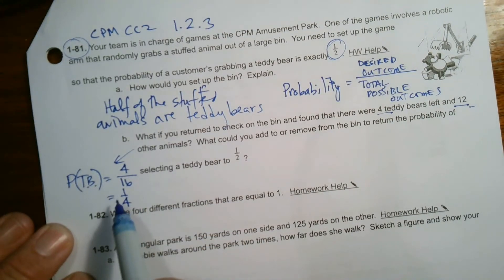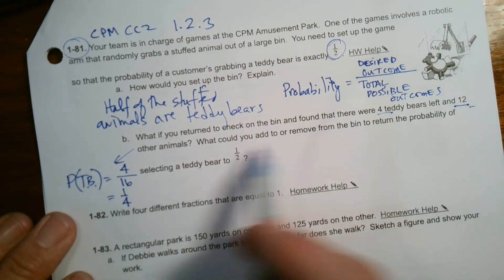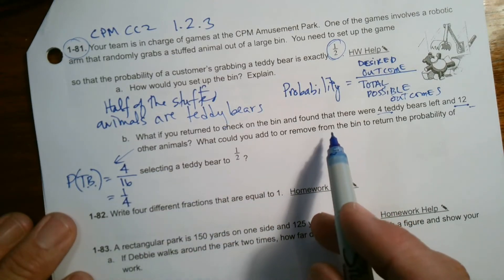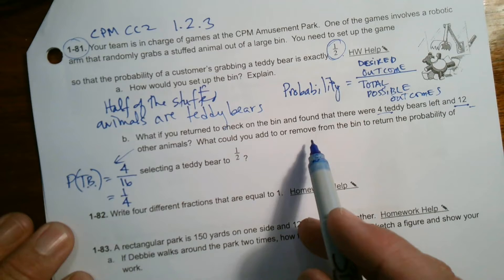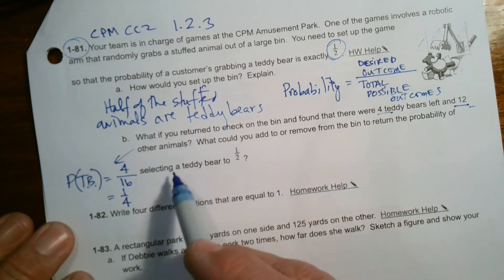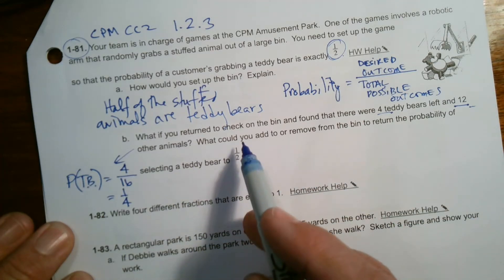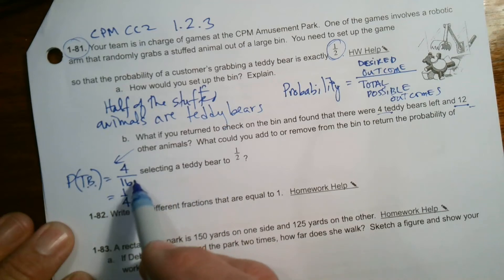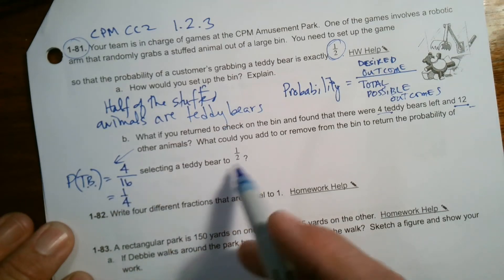So right now the probability is not one-half. We need it to be one-half. So what do we need to do? What would you add or remove from the bin to return the probability to a teddy bear of one-half? Well, again, we need to make sure that half of the animals are teddy bears.